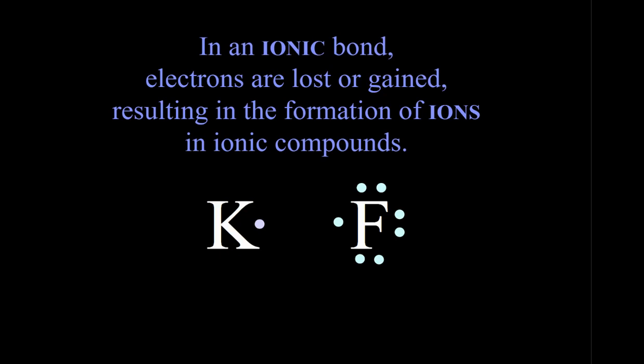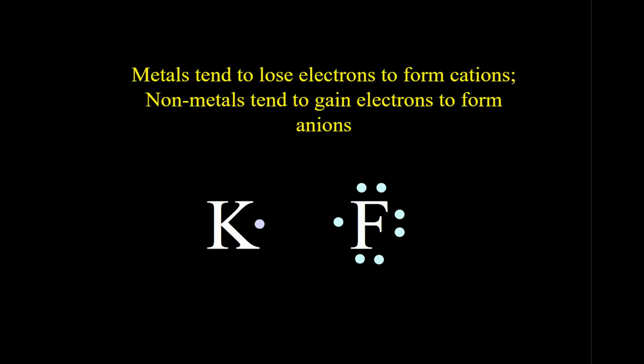So this bond is going to form because fluorine really wants an extra electron and potassium would like to give its electron away. So metals tend to lose electrons to form cations. Nonmetals tend to gain electrons to form anions.